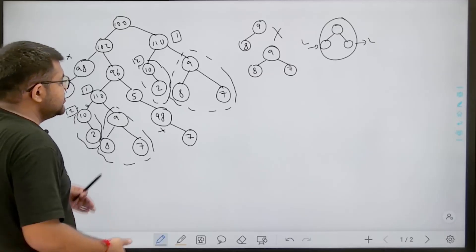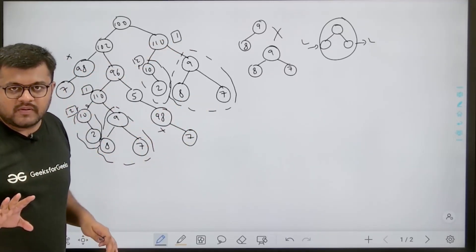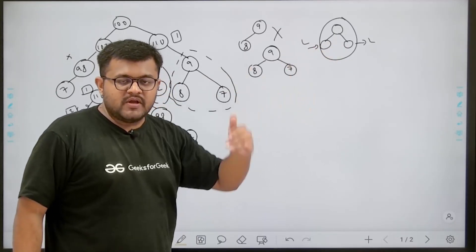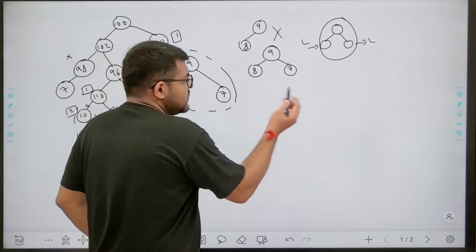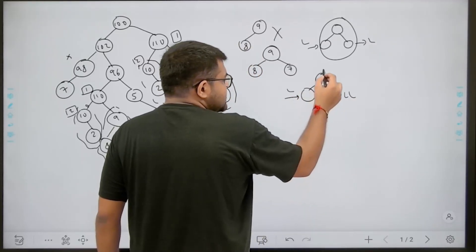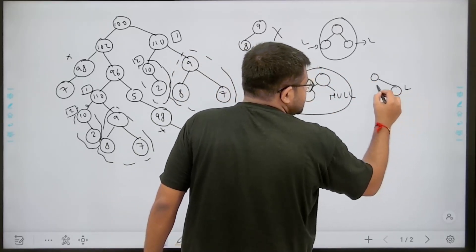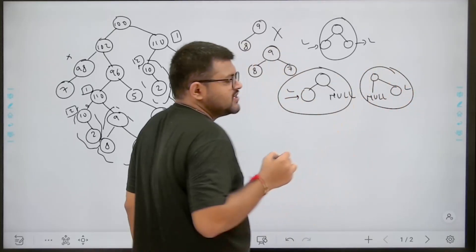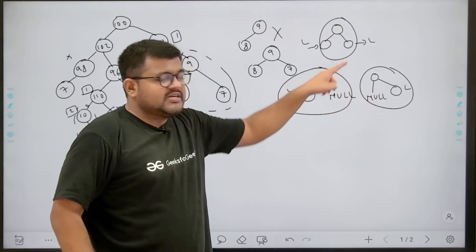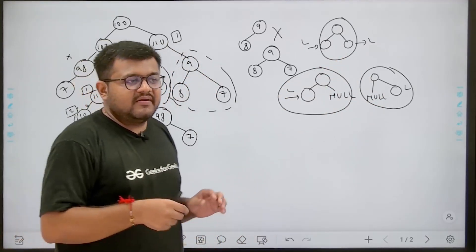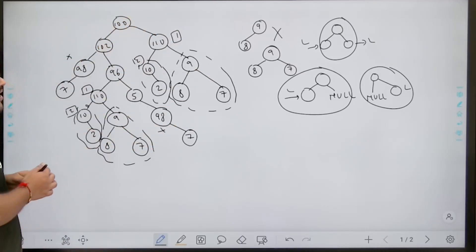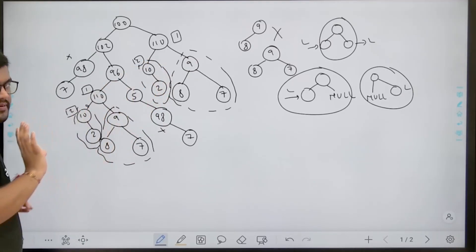Subtrees of size 3 have both left and right children as leaf nodes. Subtrees of size 2 come in two forms: either the right child is null and the left child is a leaf node, or the left child is null and the right child is a leaf node. We only need to check these three types for duplicates.